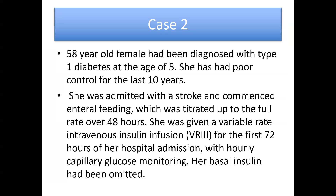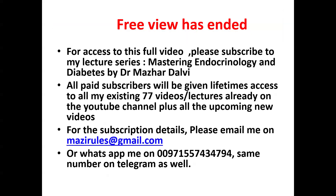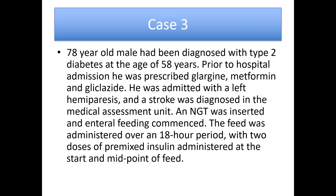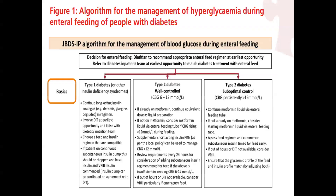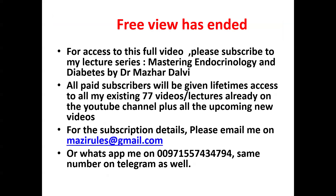Case number two: a 58-year-old female diagnosed with type 1 diabetes at age 5, with poor control for the last 10 years, admitted with stroke and commenced on enteral feeding. Titrated up to the full rate over 48 hours. She was given variable rate intravenous insulin infusion for the first 72 hours of hospital admission with early capillary blood glucose monitoring, and her basal insulin doses had been omitted. To continue this case and access the full lecture series covering these guidelines in detail, please subscribe.